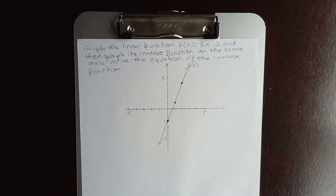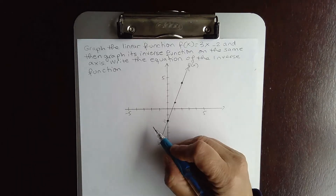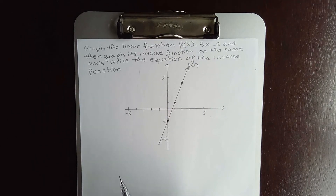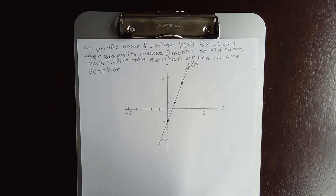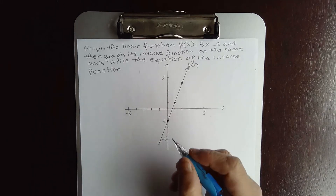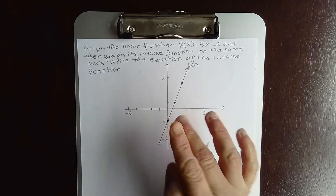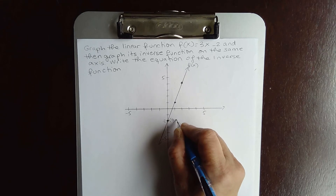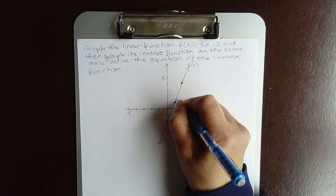Now, to graph the inverse function — recall from class that the graph of an inverse function is always symmetric with respect to the line y equals x. Also, the domain of f becomes the range of f inverse, and the range of f becomes the domain of f inverse. Basically, you flip the x and y coordinates. Here the point (0, -2) becomes (-2, 0), and the point (1, 1) stays (1, 1).